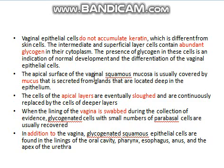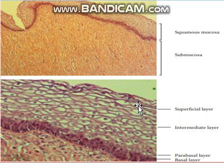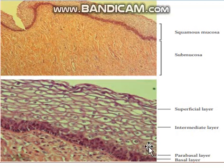The vaginal squamous mucosa is covered by mucus secreted from glands located deep inside the epithelium. The apical layer cells are eventually sloughed and continuously replaced by cells of the deeper layers. The lower most layer keeps migrating upward, forming new layers, and once cells reach the topmost part they shed off, and this cycle keeps repeating.